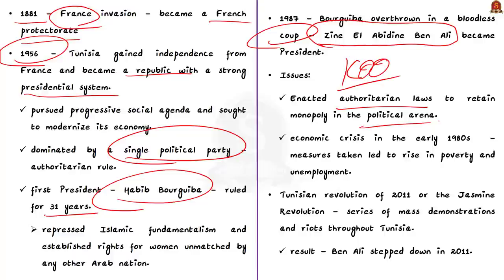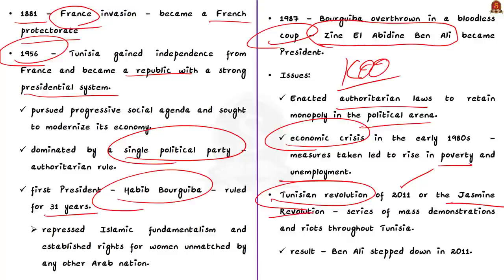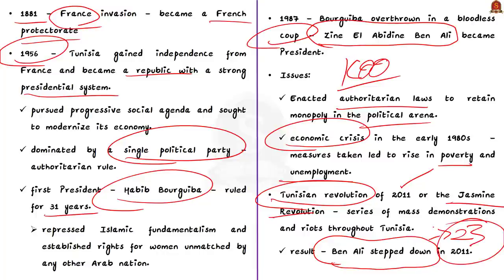In the early 1980s, Tunisia experienced a severe economic crisis with a huge rise in poverty and unemployment. The country was under dictatorship and also facing serious economic issues, building enormous pressure among the people. This led to a series of mass demonstrations and riots known as the Tunisian Revolution or Jasmine Revolution, which happened in 2011. As a result, President Ben Ali stepped down in 2011 after ruling with an authoritarian fist for 23 years.